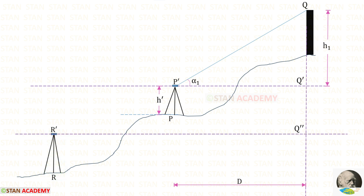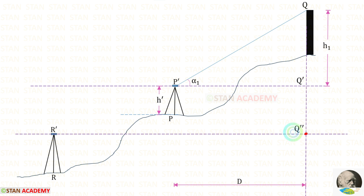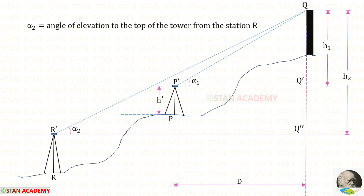Along the horizontal axis of the telescope in the theodolite at R, we draw a horizontal projection. Let us keep the corresponding vertical projection point as Q double dash. Let us keep the height of Q Q double dash as H2. From the theodolite at station R we have to focus the top of the tower and take the reading of the vertical angle. Let us keep the vertical angle as alpha 2.